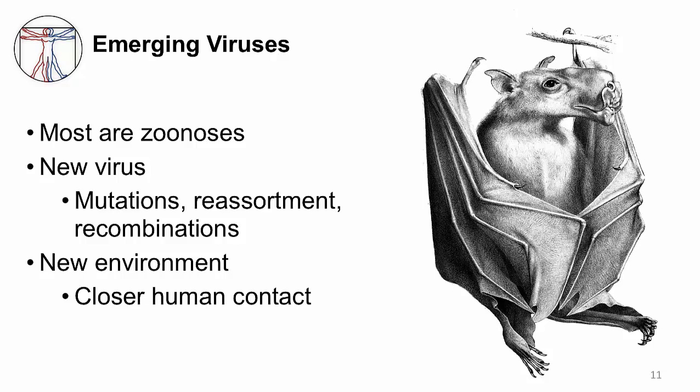These new viral infections of humans evolve based on two concepts. First, these new viruses arise from mutations, reassortment, or recombinations, and then attempt to achieve successful replication within old and new hosts. The second concept is about new environments that develop placing humans in closer contact with animal reservoirs. Ecology changes and an increase in global travel can actually create these new environments.